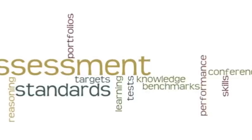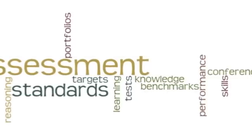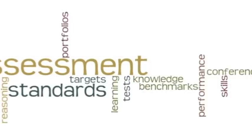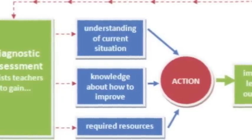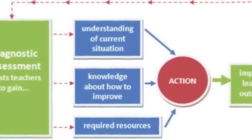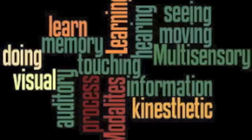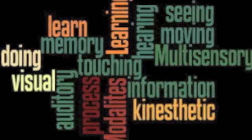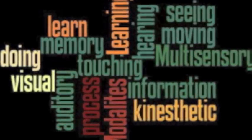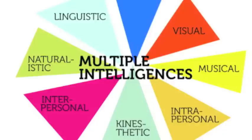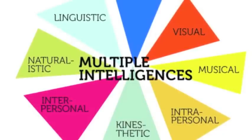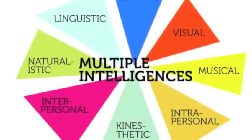Those steps are diagnostic assessment, formative assessment, and summative assessment. Diagnostic assessment is done before instruction takes place. This allows the teacher to determine the level of instruction and where to place the students. This is the time we find out the child's learning modalities and multiple intelligences. It is extremely important to obtain as much background information of the child as possible.